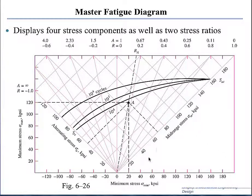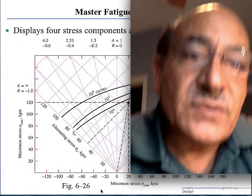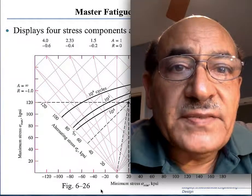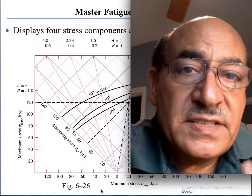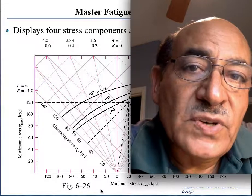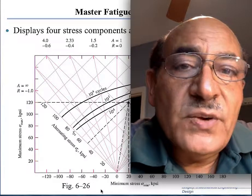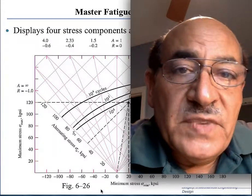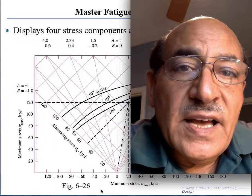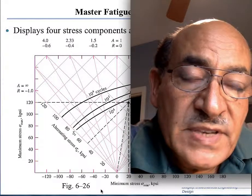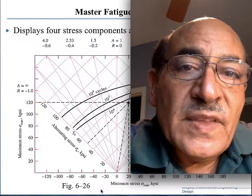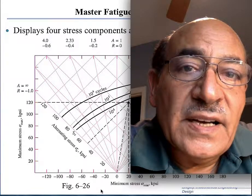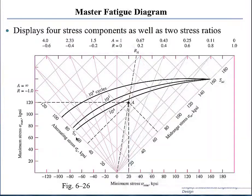Another method for design is also graphical and is called the Master Fatigue Diagram. Similar to the Modified Goodman, we want to plot the mean stress and the alternating stress along with the minimum and maximum stresses, and show how they are related and use it in design.